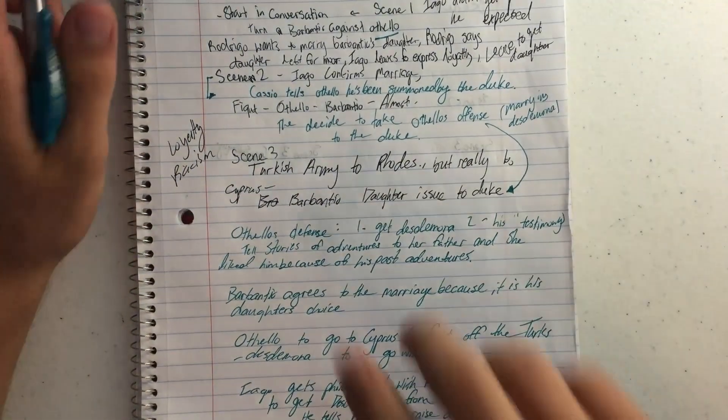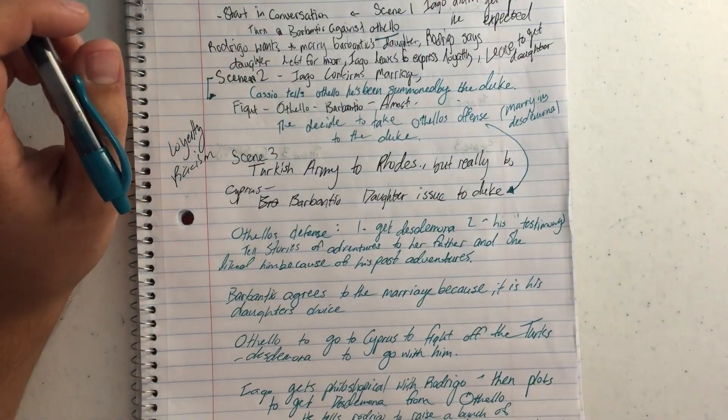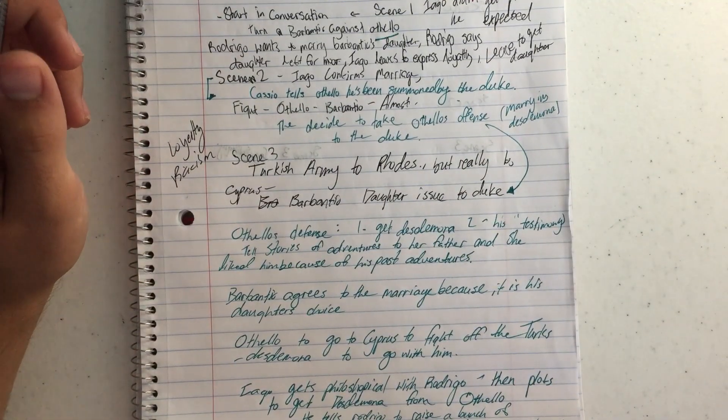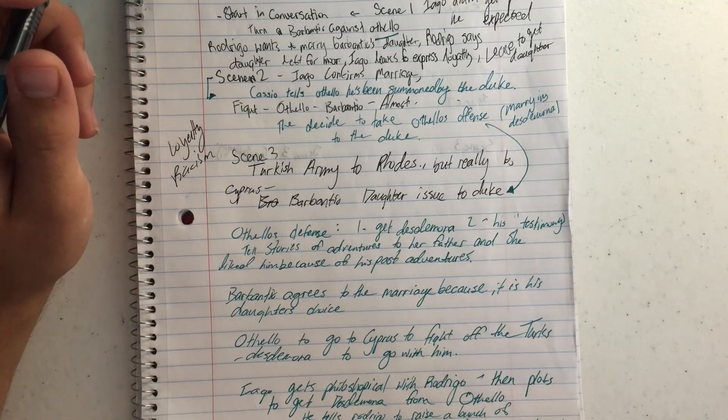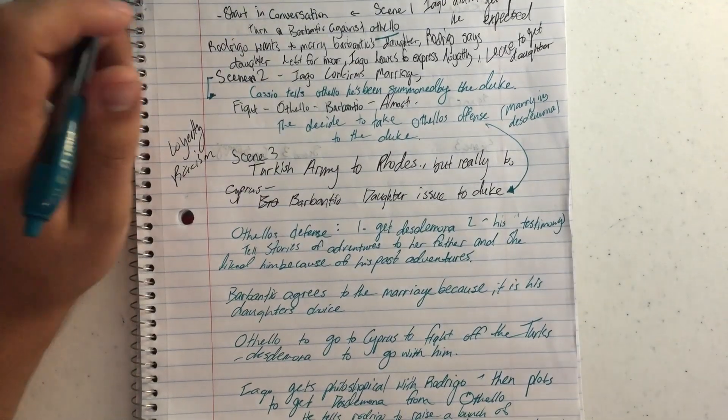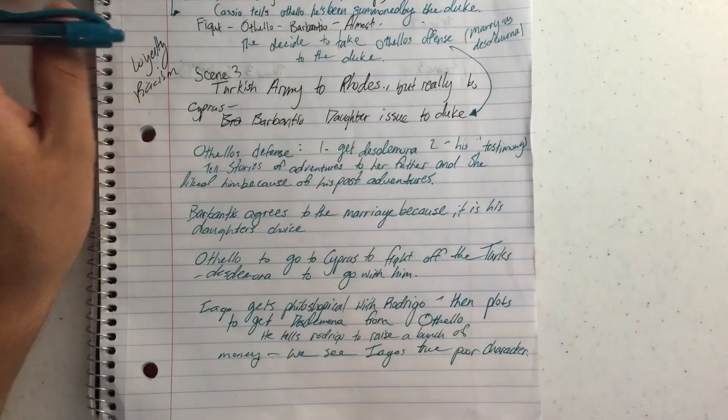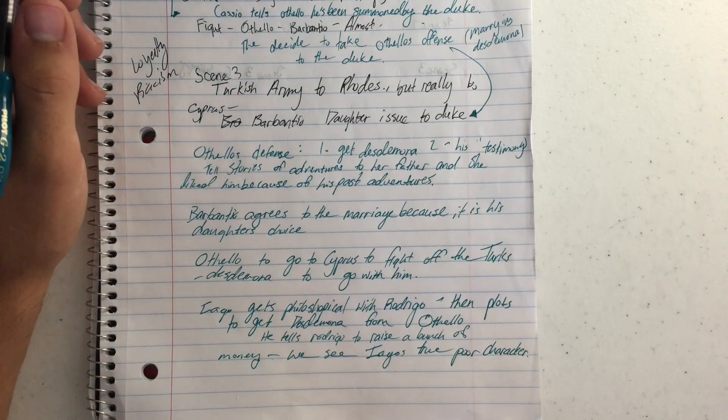In Scene 3, we meet the Duke. He's got messengers coming in to tell him the Turkish army is attacking Rhodes, but no, they're really moving to Cyprus. Then Brabantio shows up. He's like, hey, help would have been useful. But he's like, sorry, I've got another issue. They talk about how his daughter's been taken away from him.